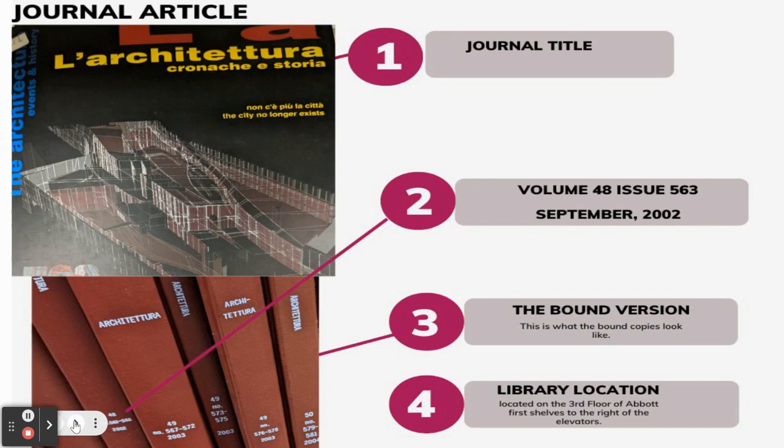The top photo shows the cover of a journal that has been bound in our collection at UB. You can see the journal title, La Arquitectura. And on the binding of the bound journal, you can see the volume number, issue number, and dates — that is the way that they are organized and how you can find them. Keep in mind, these are located on the third floor of Abbott Library, and they're the first shelves to the right of the elevators.